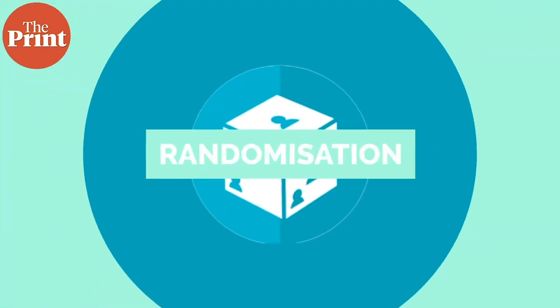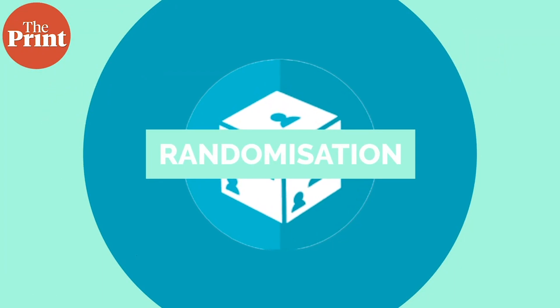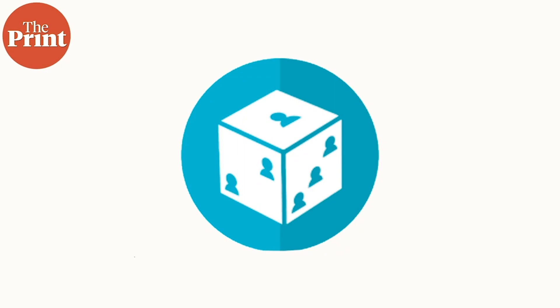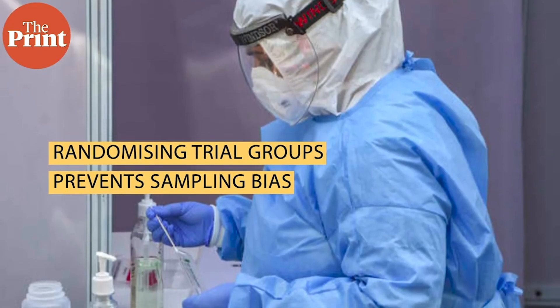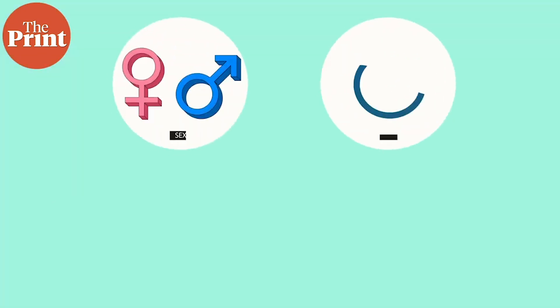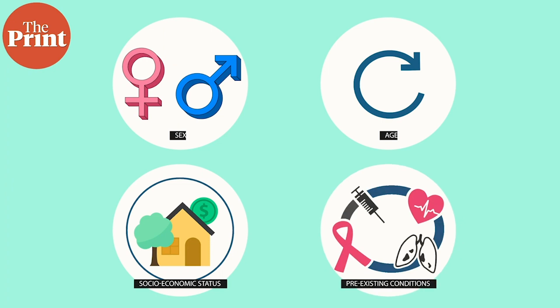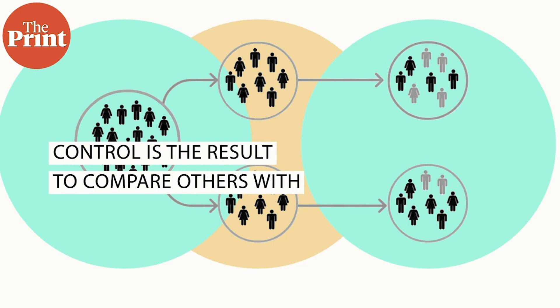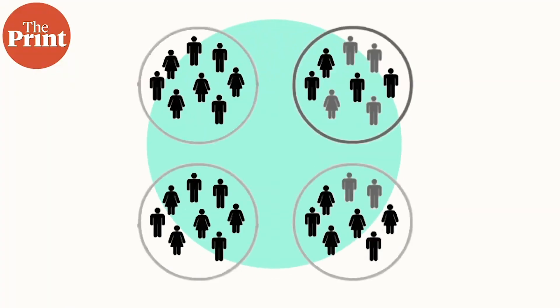Randomization is the process of allocating people to different groups at random, with each group receiving different treatments before their results are compared with each other. This is to prevent biases in data stemming from other factors such as differences in sex, age, socioeconomic status, pre-existing conditions, etc. This results in each group having a relatively good mix of all these parameters — it's never perfectly homogenous, but it reduces the chances that one group is substantially different from another, such as a high incidence of diabetes in one group versus the others.